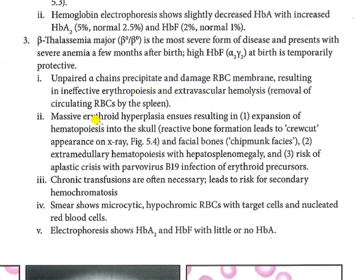Hemolysis occurs with removal of circulating RBCs — this is the same process of hemolysis I have described before. Most of the time, extravascular hemolysis removes the RBCs via the spleen.